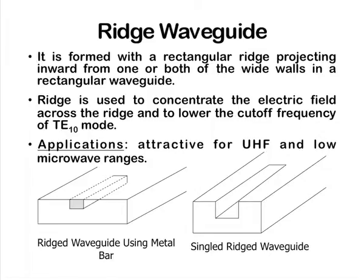The rectangular waveguide is also modified by inserting a ridge or dip on the top side. The advantage of this kind of rectangular waveguide is that it can support somewhat lower frequencies than the corresponding plain rectangular waveguides. These waveguides are capable of handling VHF and UHF frequencies, which are most commonly used in television signals.